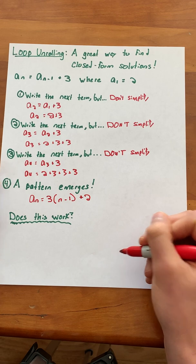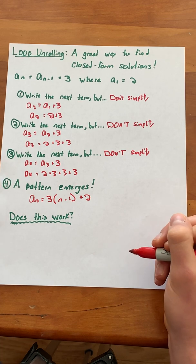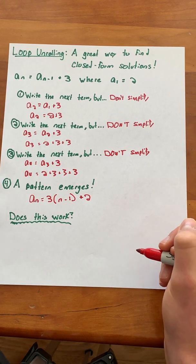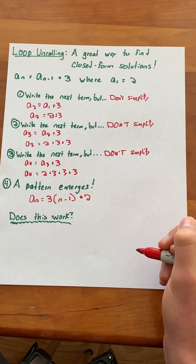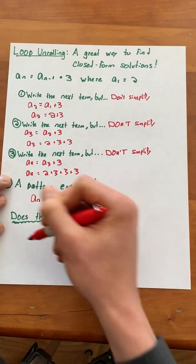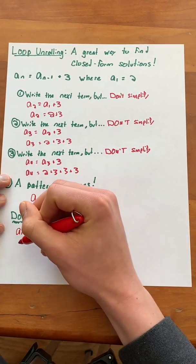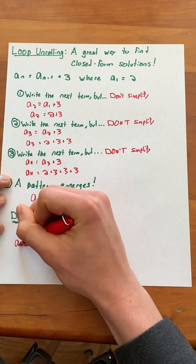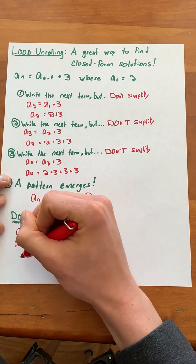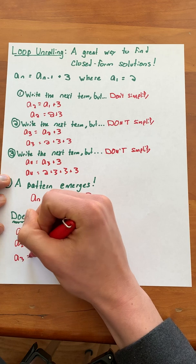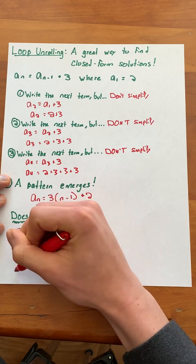Now whenever we form a closed form solution we want to make sure that it actually works. One way that we can do this is by writing the first few terms of our recurrence relation and then making sure that equation works. So we've been given that a of 1 equals 2 and then we can figure out that a of 2 equals 5, a of 3 equals 8, and a of 4 equals 11.